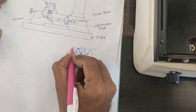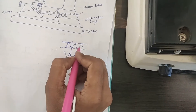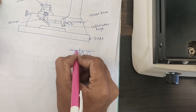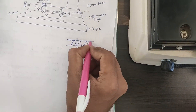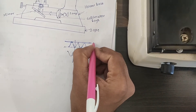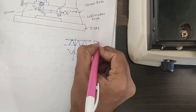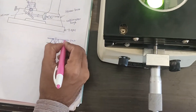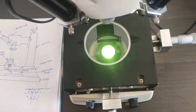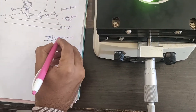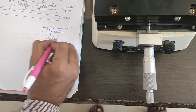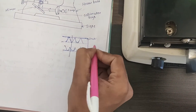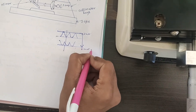To find out the major diameter of the thread, adjust the horizontal line to the top of the crest of the thread. Take this as the initial reading. Then bring the horizontal line to the bottom of the crest of the thread. This distance is considered the final reading.